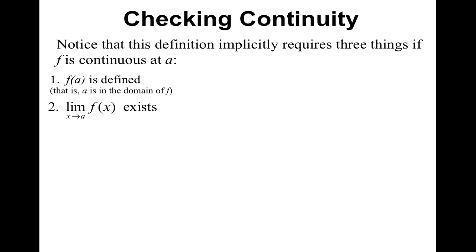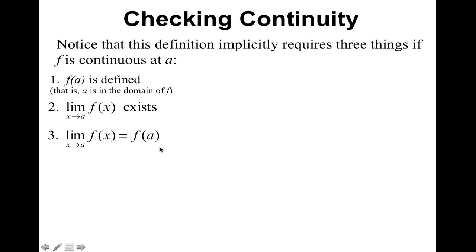The limit as x approaches a of f of x exists. And then the last one, which basically says that one and two are the exact same value. So you can have f of a defined and the limit existing, but if these two are not the exact same value, then three does not work, and therefore that function would not be continuous.